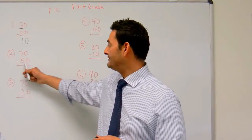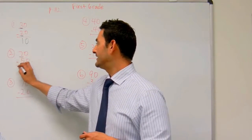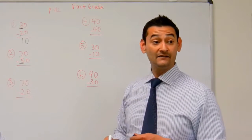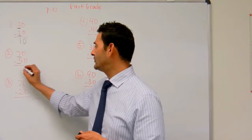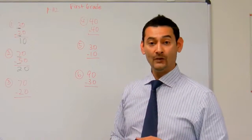Now let's look at this one, 70 minus 50. Let's look at the tens place. We have 7 minus 5. 7 minus 5 is 2, so 70 minus 50 is 20.